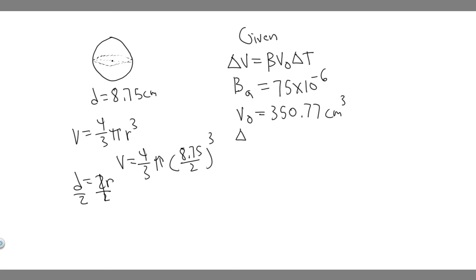Now let's find the change in temperature. They tell us it's going to go from 30 to 180 degrees Celsius. To find the change in something, you take the final minus the initial. So the final is 180, the initial was 30, giving a change in temperature of 150 degrees Celsius.